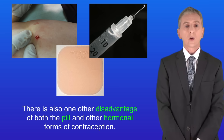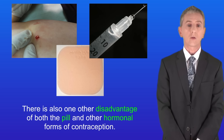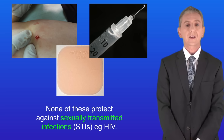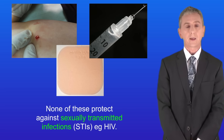However, just like the pill, these hormonal forms of contraception can have side effects. There is also one other disadvantage of both the pill and other hormonal forms of contraception: none of these protect against sexually transmitted infections, or STIs — for example, HIV.